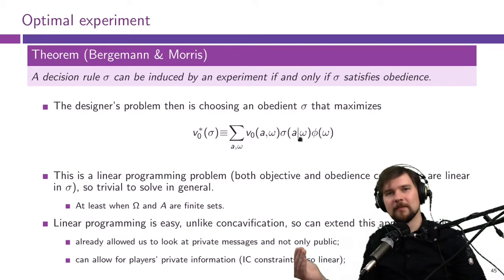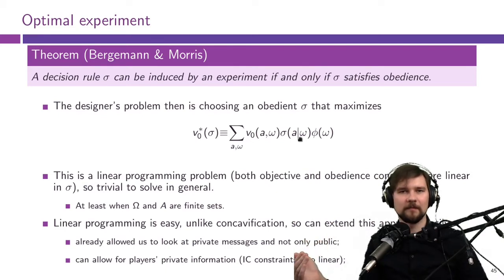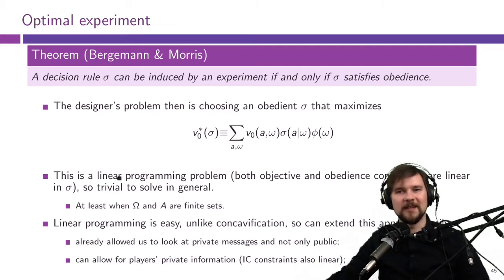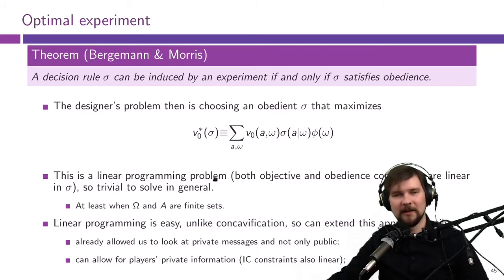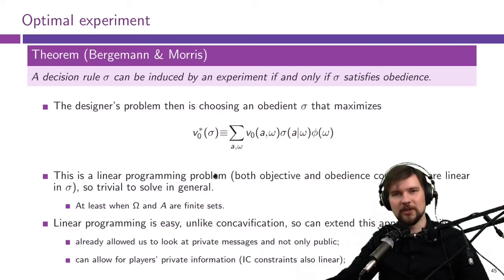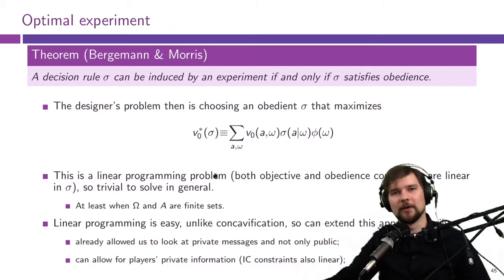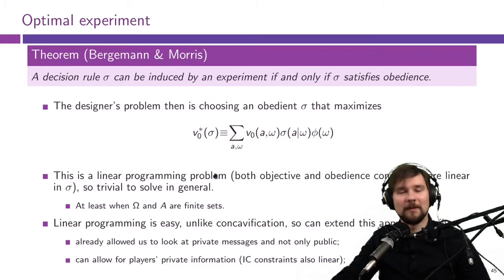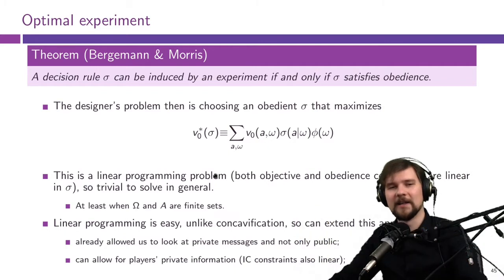Why is this a better problem than concavification? The main advantage is that this is a linear programming problem. If you've had a course on linear programming, you know it's among the simplest things computationally — from the computational perspective, if you feed a linear programming problem into a computer, it will solve it quickly even if it's highly dimensional. Why is this a linear problem? Note that you're maximizing over σ, and the objective function v₀*(σ) is linear in σ — in these probabilities of different action profiles given states.